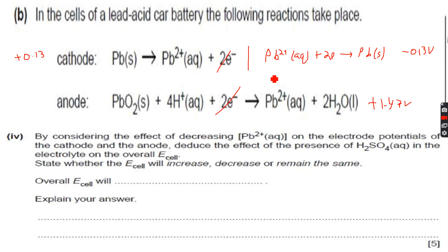So if Pb2 plus is decreasing, according to Le Chatelier's principle, the system will act to oppose the change. So it will shift to the left to increase Pb2 plus. So as the equilibrium will shift to the left, this will become more negative. Let's say, minus 0.25, this becomes minus 0.25 now.